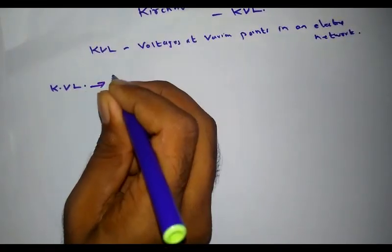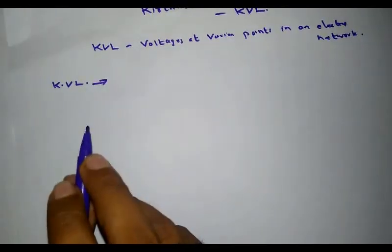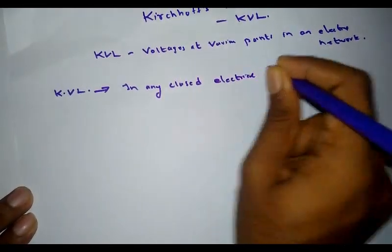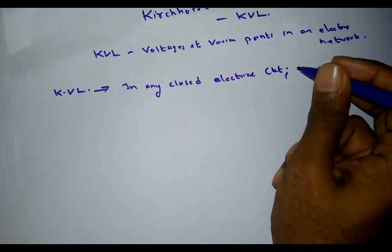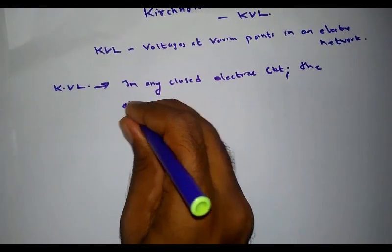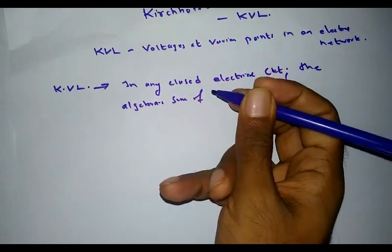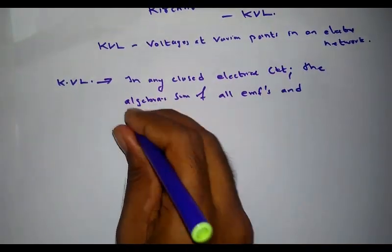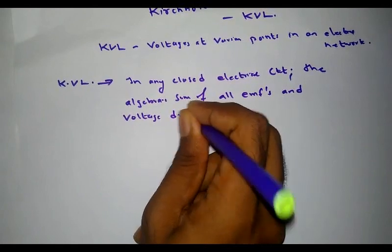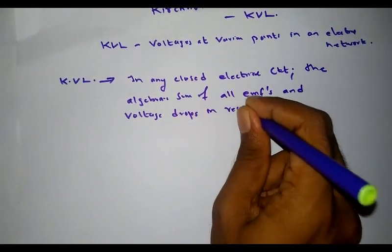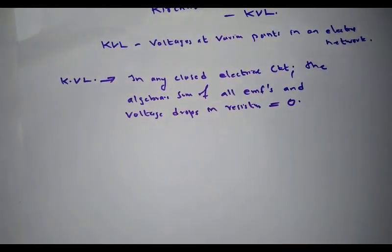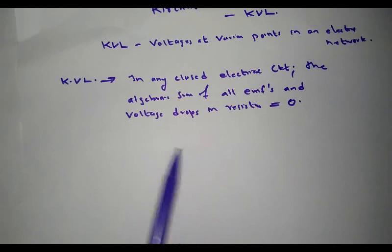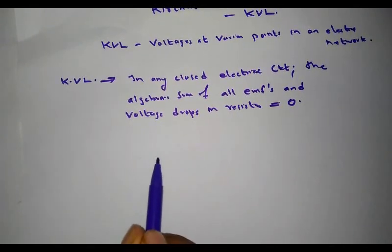KVL states that in any closed electrical circuit, the algebraic sum of all EMFs and voltage drops in resistors is equal to zero. This is the basic statement of Kirchhoff's Voltage Law — in any closed electrical circuit, the algebraic sum of all EMFs or voltage sources and voltage drops in the connected resistors is zero.